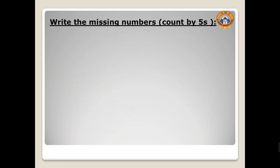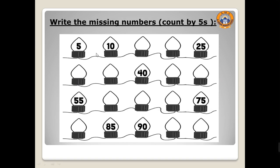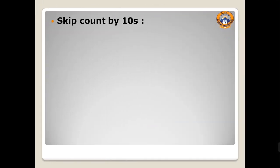Write the missing numbers or count by 5s. The first number is 5, then 10. Can you tell me the number after 10 if you count by 5s? Yes excellent, 15, then 20. The teacher guides students through multiples of 5: 25, 30, 35, 40, 45, 50, 55, 60, 65, 70, 75, 80, 85, 90, 95, then 100.